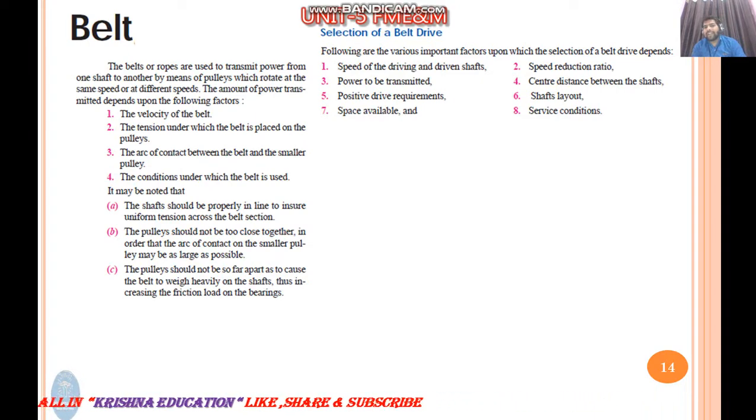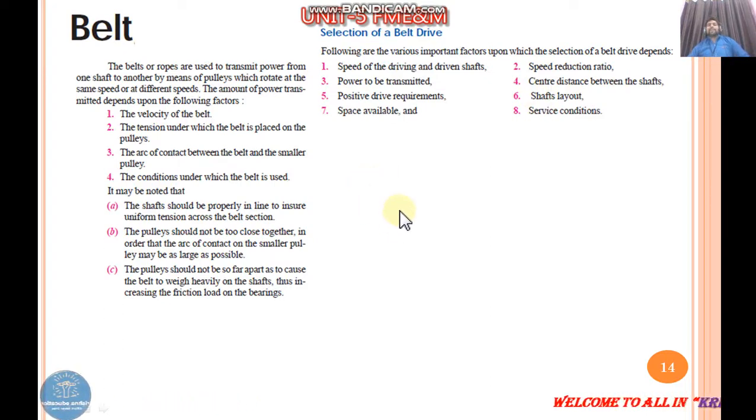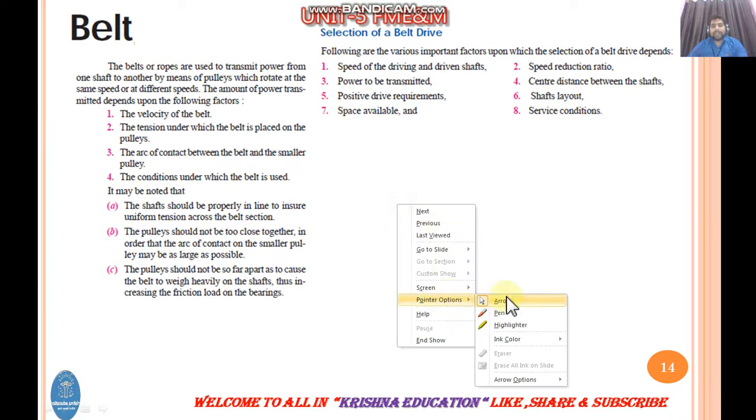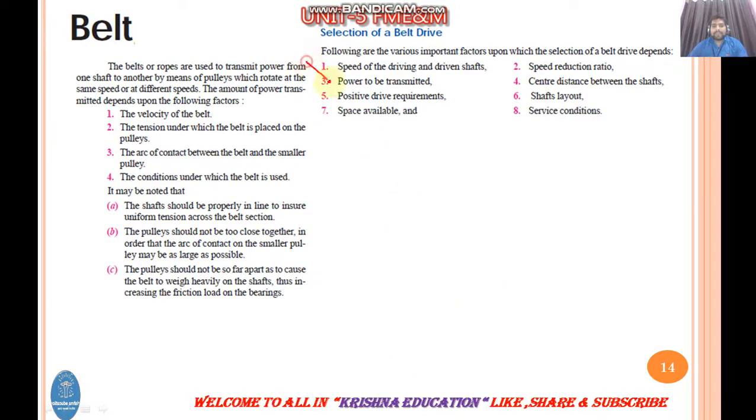When you select a belt, you need to consider these parameters: speed of the driver and driven shaft, power to be transmitted, space availability, speed reduction - whether you need to increase or decrease speed, center distance between the shaft, shaft layout, and service conditions. These are the selection criteria for belt drive.